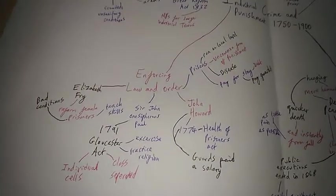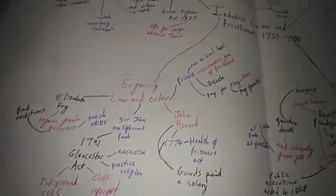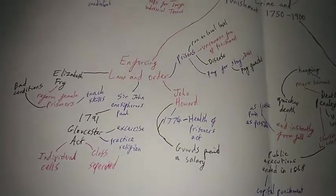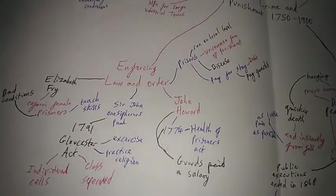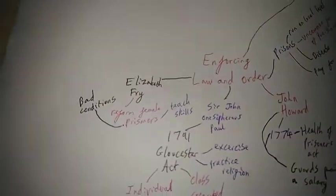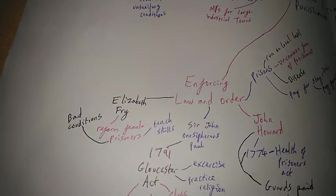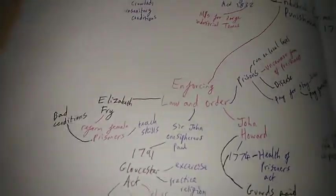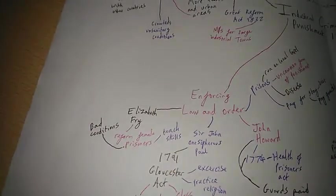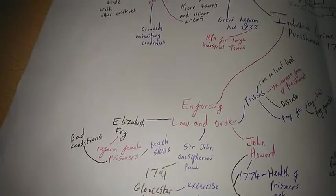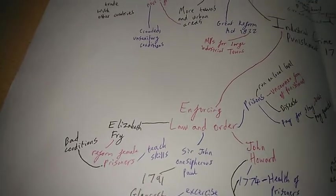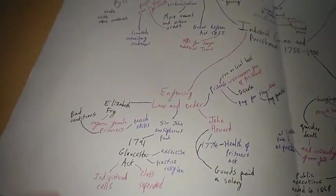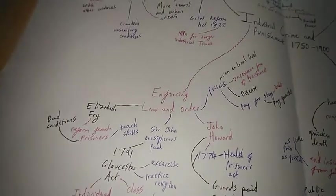Then some other people came along. John Howard, he was a prison reformer. In 1774 he was one of the main people who got the Health of Prisoners Act put forward where guards were paid a salary. And there was Elizabeth Fry, I'm pretty sure she's on a pound note. She was also a prison reformer. She got many policies about reforming female prisoners and teaching them skills. She went on about the bad conditions. Due to these two people and many others, the Health of Prisoners Act, different things got a lot better for people in prisons.